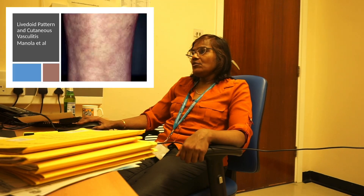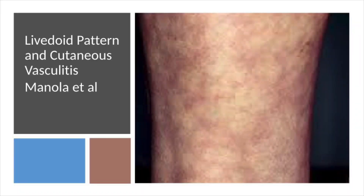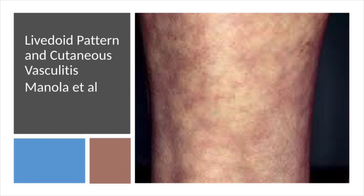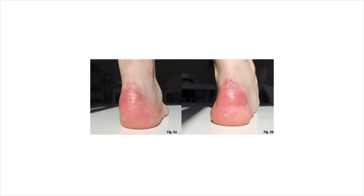There is another livedo-type rash seen in adult patients as well. It is more generalized and seen in symptomatic patients — more like a hypersensitivity rash pronounced over more parts of the body. There is also a vasculitic-type rash in a 28-year-old which manifested on day 13; she reported taking only Panadol (paracetamol) for her symptoms. You can see the bilateral distribution with violaceous papules, which conforms to a vasculitic pattern.